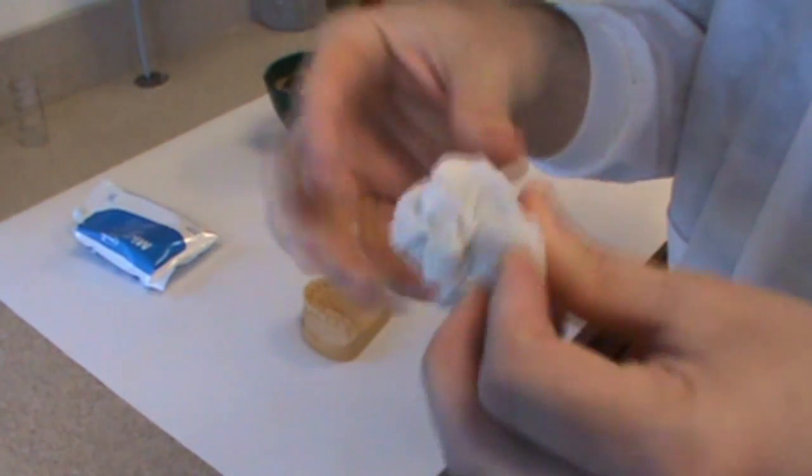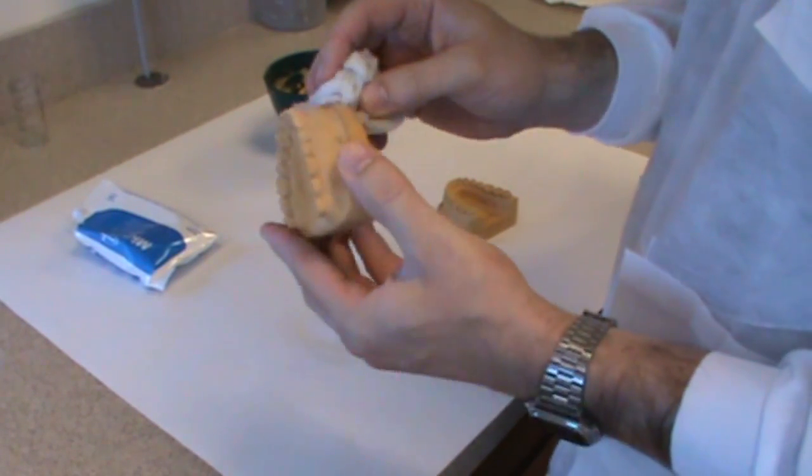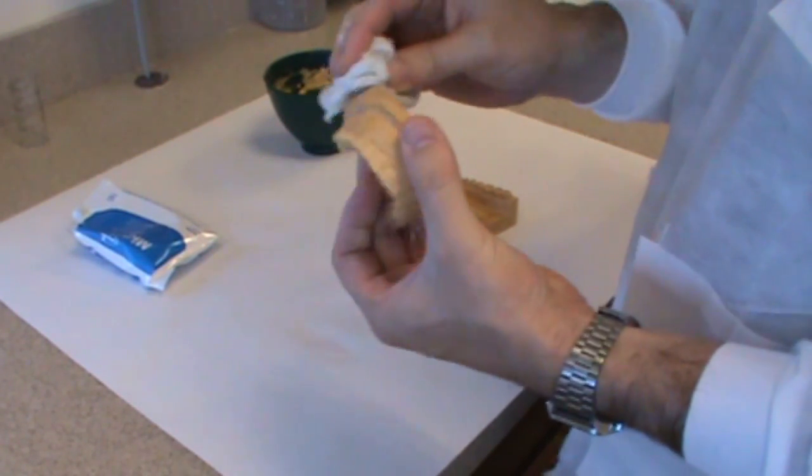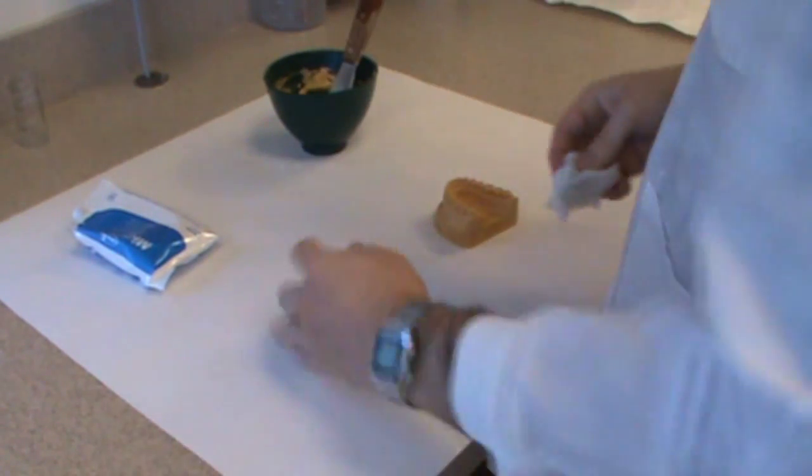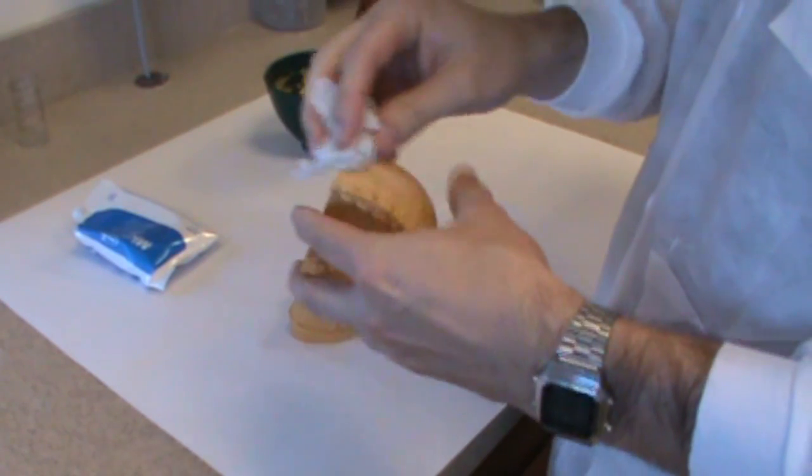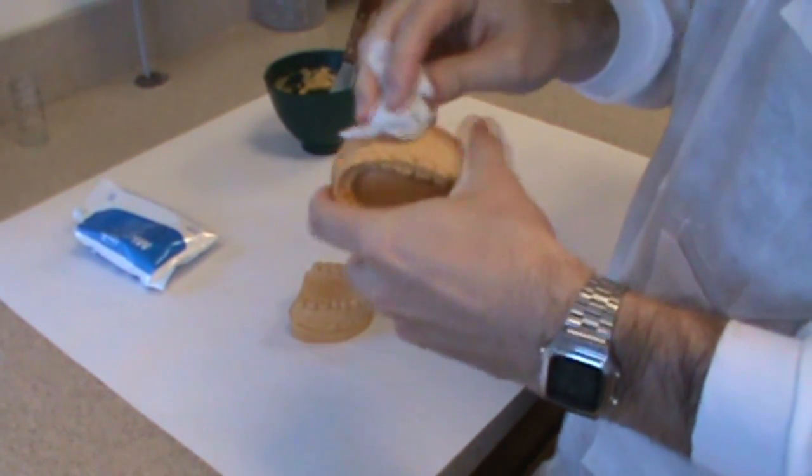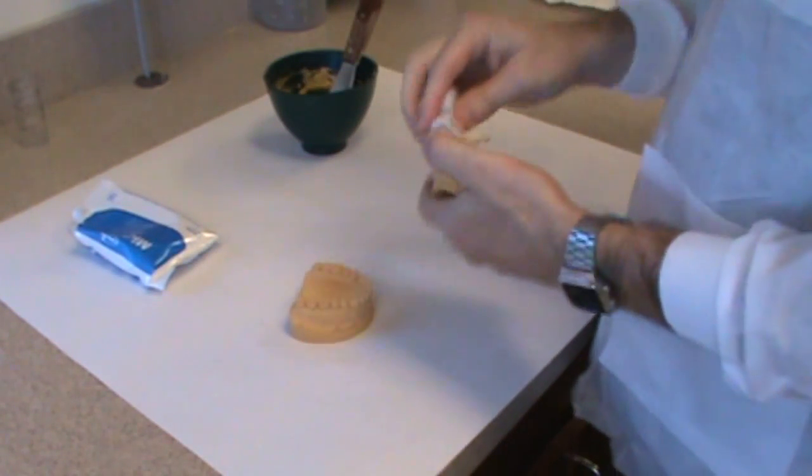I like to wet the stone beforehand because if it's too dry, it will absorb all the water out of my stone I'm putting on it and it won't adhere as well. You could run these under water. I like to just dab with a little bit of a cup with a wet paper towel to get the surface wet.